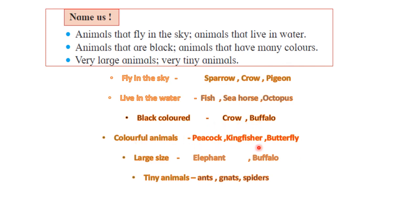Colorful animals: peacock, kingfisher and butterfly. Large-sized animals: elephant and buffalo. Tiny animals: ants, gnats and spider. There are more answers possible; these are just samples given.